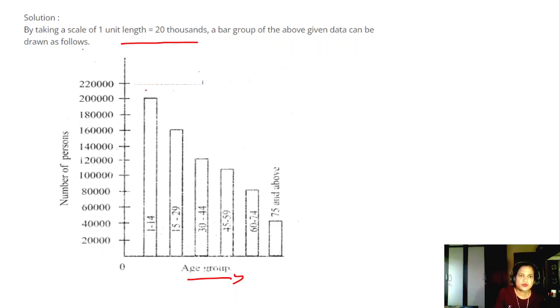1 to 14 years, how much is it? It is 2 lakhs. 15 to 29, it is 1.6 lakhs, 1,60,000. 30 to 44, it is 1 lakh, 1.2 lakhs. Then above 60, below 74, it is 80,000. Then 75 years and above, how much are they? 40,000. So this is the bar graph representation of the problem.